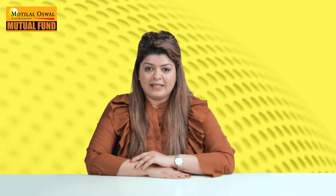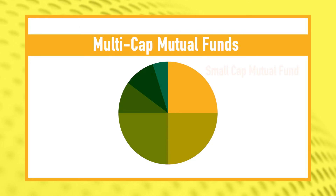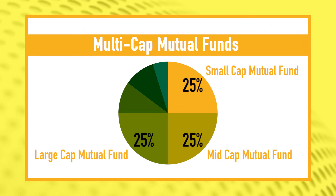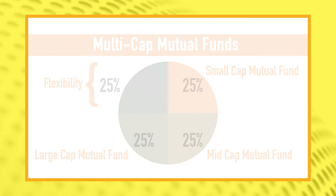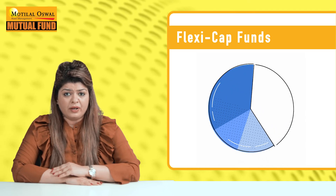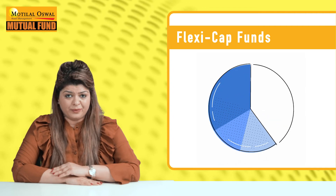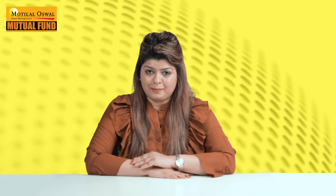Number five: Market cap flexibility. Multi cap mutual funds invest across small cap, mid, and large cap stocks with an equal measure of 25 percent each, leaving 25 percent flexibility with the fund manager. Flexi cap funds, on the other hand, can invest in any stock irrespective of the company's market cap, without being constrained by a given proportion. When markets are growing, both these funds tend to make higher returns through increased mid and small cap allocations and the ability to shift across market caps.